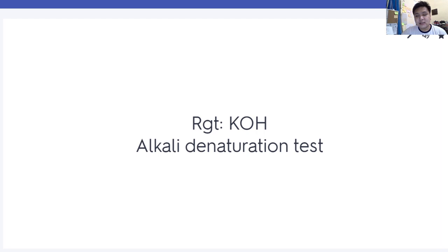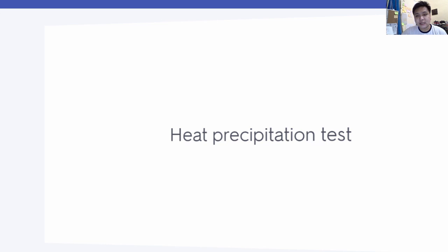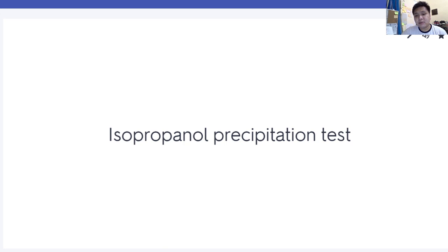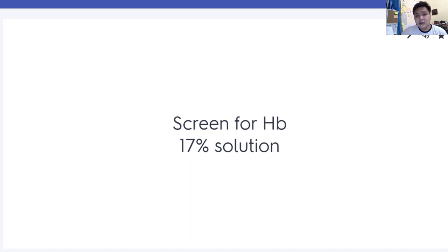Singer test uses CO hemoglobin. Howard-Betke is an acid elution test. Heat precipitation test is used for screening hemoglobin H — incubate the sample at 50 degrees Celsius for 2 hours. Isopropanol precipitation test is also used to screen for unstable hemoglobin.